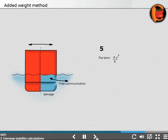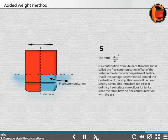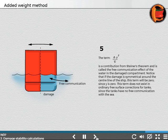The term A×Y²/∇ is a contribution from Steiner's theorem and is called the free communication effect of the water in the damaged compartment. Notice that if the damage is symmetrical around the centerline of the ship, this term will be zero since Y is zero. This term does not exist in ordinary free surface corrections for tanks, since the tanks have no free communication with the sea.